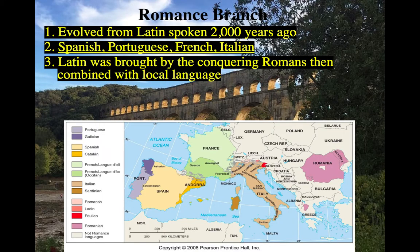Don't forget about the Romance branch. This obviously comes from the Roman Empire — Spanish, Portuguese, French, and Italian. Basically, if you were in the Roman Empire, as you can see on the map, you're part of that branch, all sharing a common ancestral language.